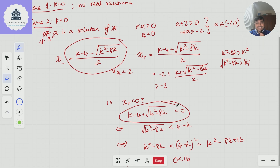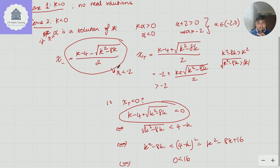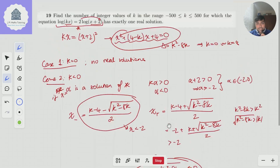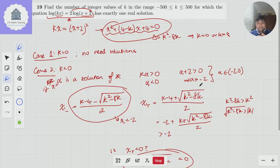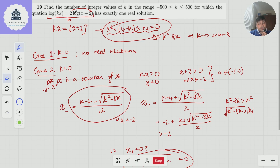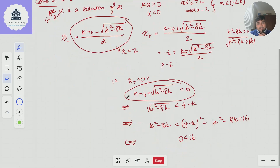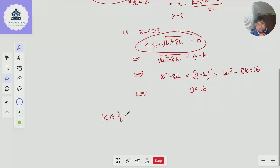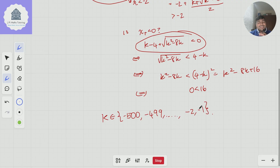Amazing. So in case 2, x− is definitely less than minus 2 and is not a solution to star. And x+ is definitely between minus 2 and 0, so it is a valid solution to the original equation — both logarithm inputs are positive. When k is negative, any value of k works. So we get k = −500, −499, all the way down to −1.